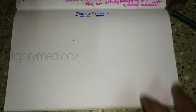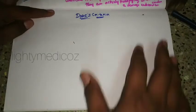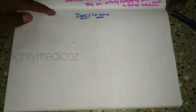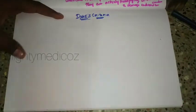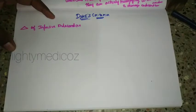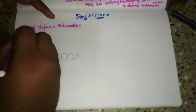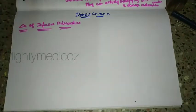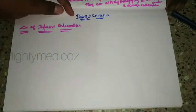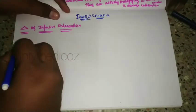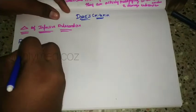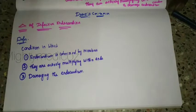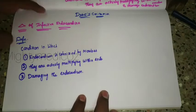Good morning everybody. Today's topic of the chapter is Duke's criteria. If you want to ask questions about this, you can search for a long time. They give answers to Duke's criteria. If a patient has infective endocarditis, we use Duke's criteria. I would like to cover the definition of infective endocarditis and the criteria in three points.